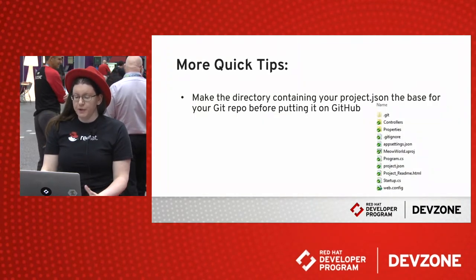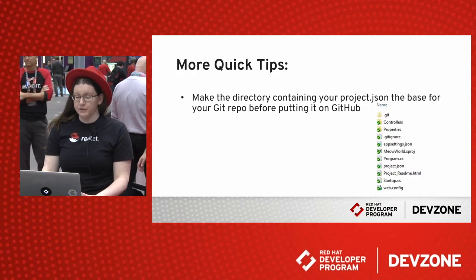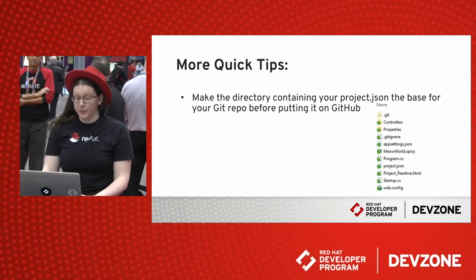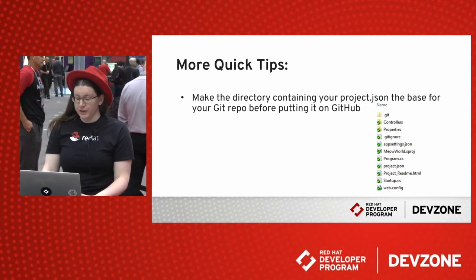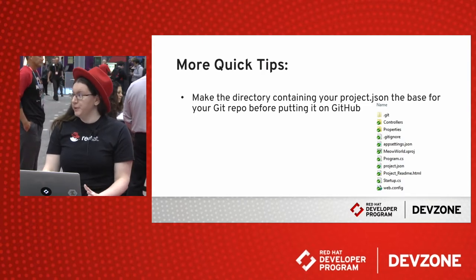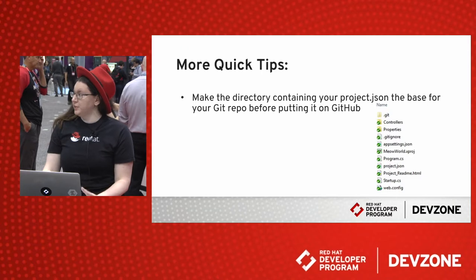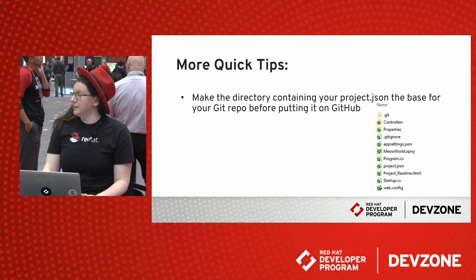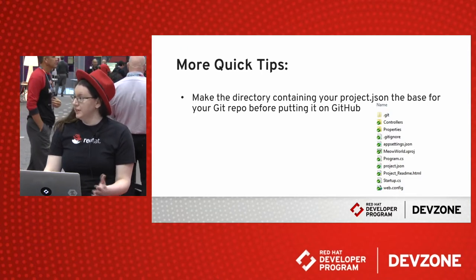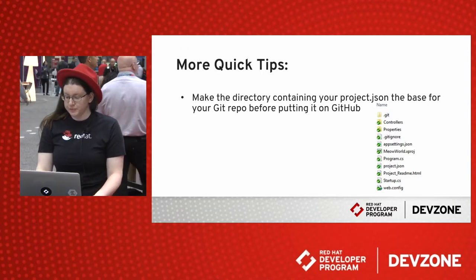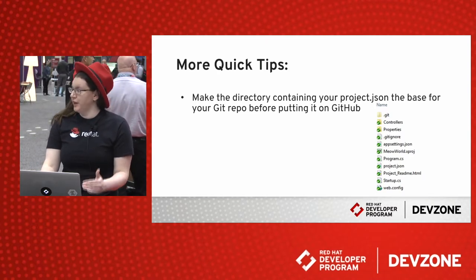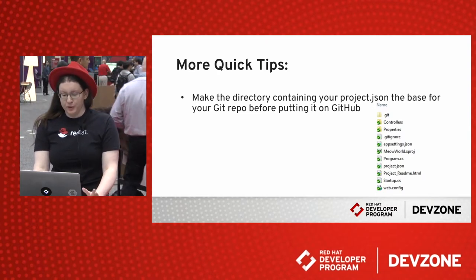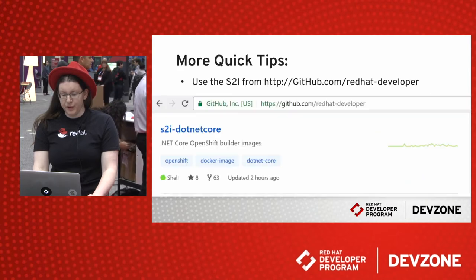When putting your app on GitHub, make sure that the base directory of your git repo is the one that contains your project.json file. OpenShift will need to be able to find this — otherwise it's going to tell you that the file does not exist and it can't build. So make sure your file structure has that at the base of your repo.